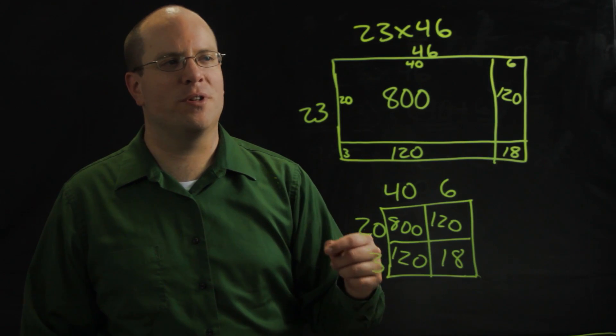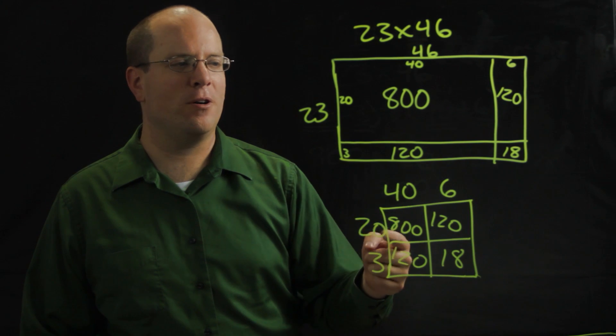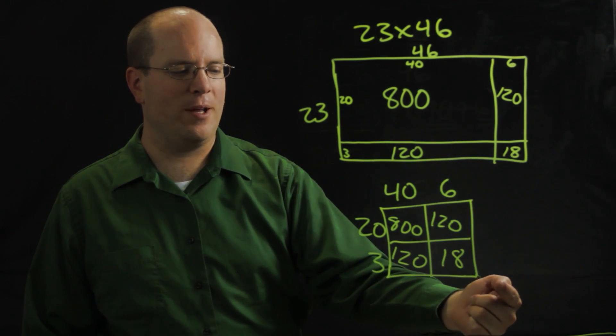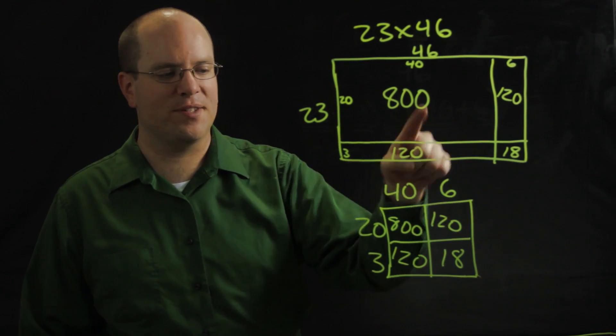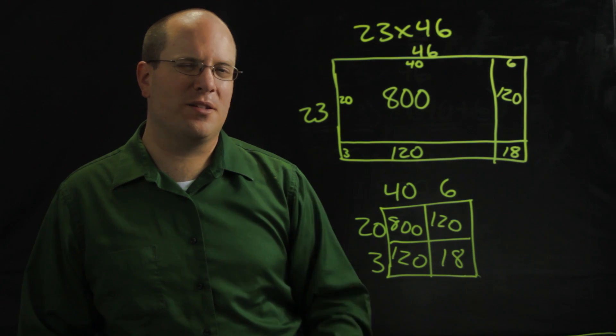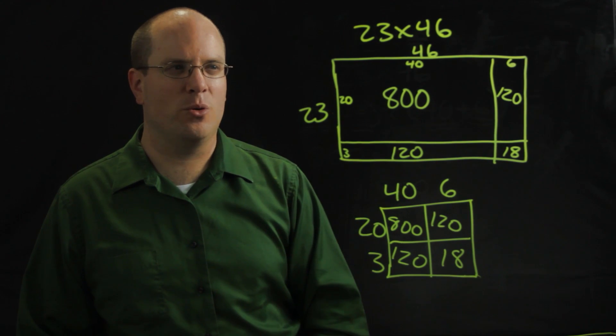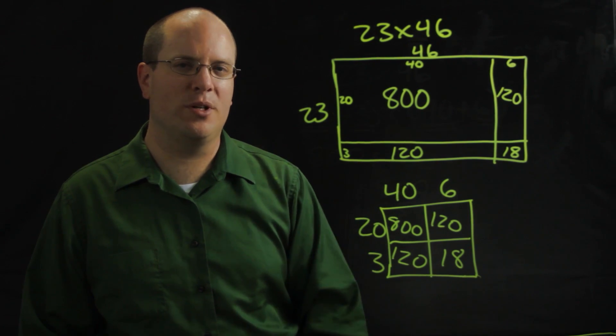So whether your students use the traditional FOIL way that I showed earlier, this way or this way, they'll get the same answer. They'll have the same numbers in each one. And it's a good visual way if you use one of these two to help them understand multiplying two-digit numbers together.